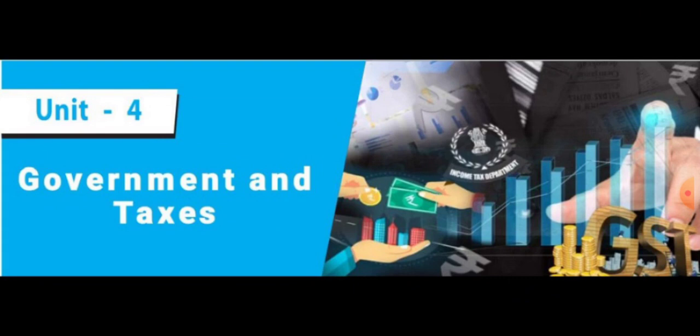We learned about the tax system. Some economists give a list of canons of taxation — that means accepted rules. For example: canon of equity, canon of certainty, canons of economy and convenience, and canons of productivity and elasticity.